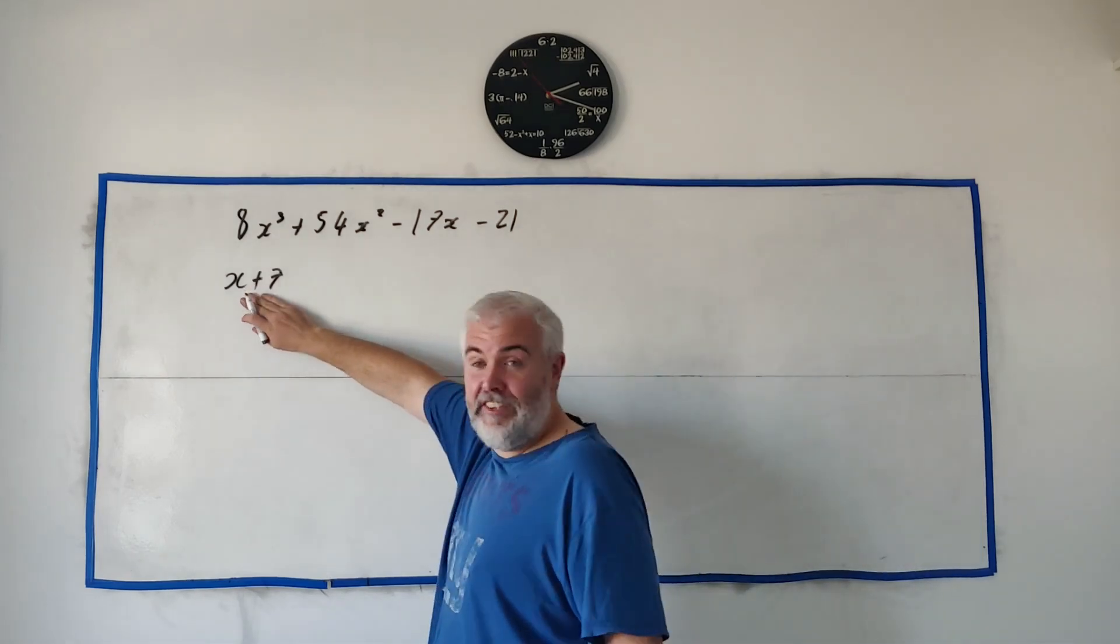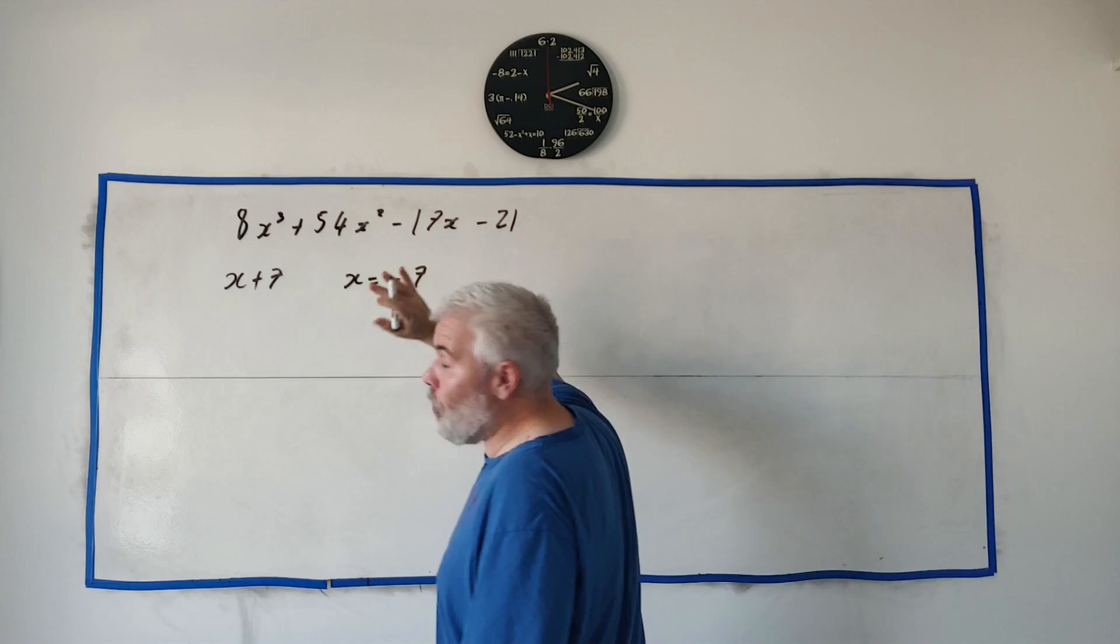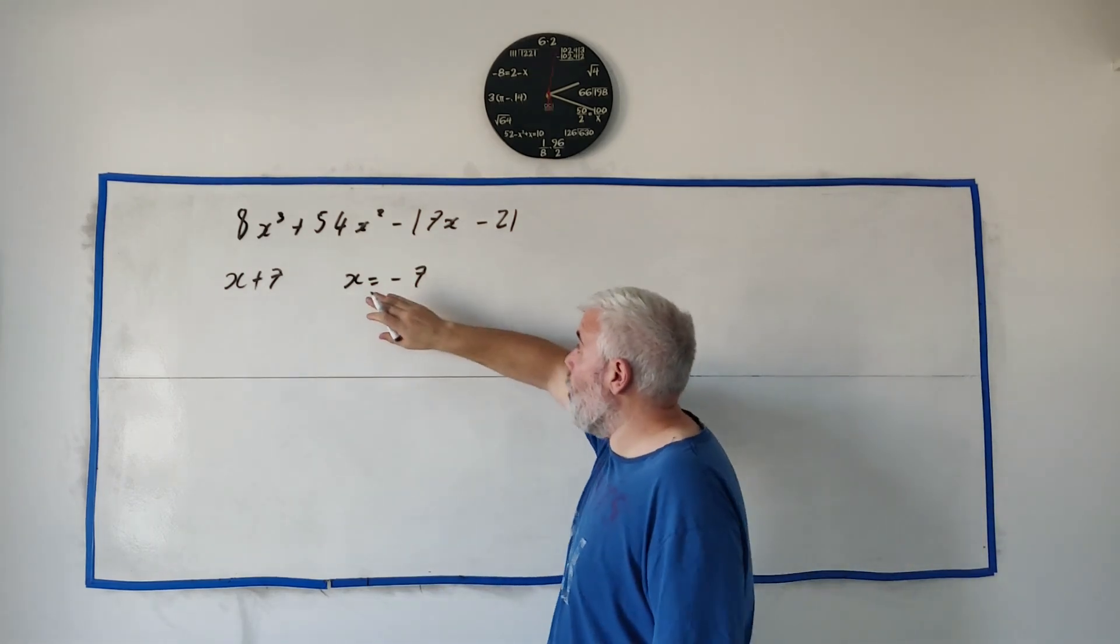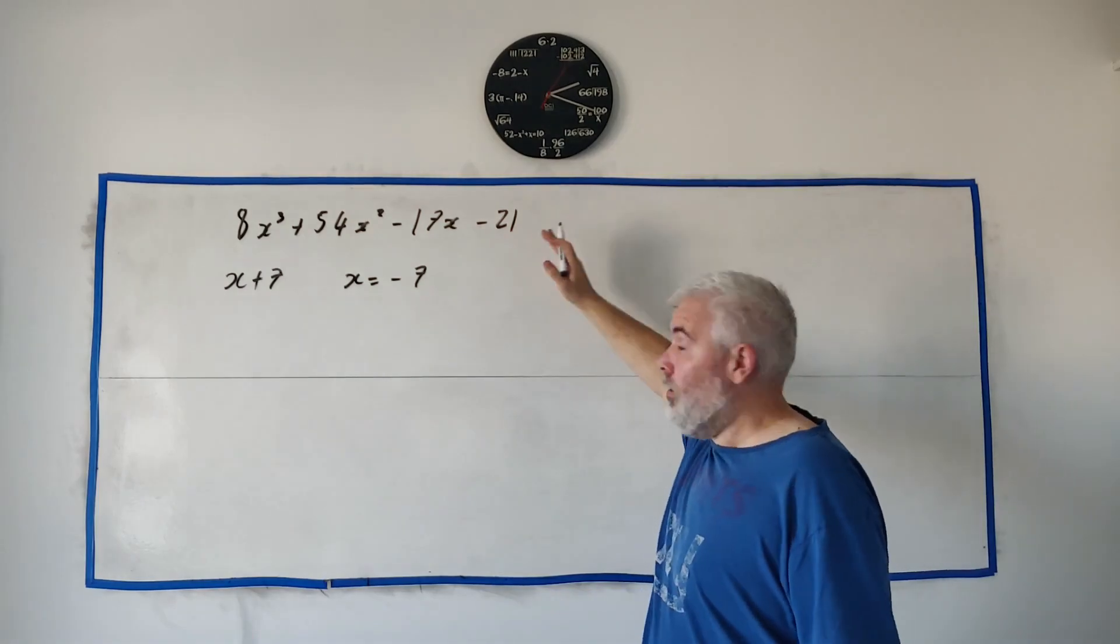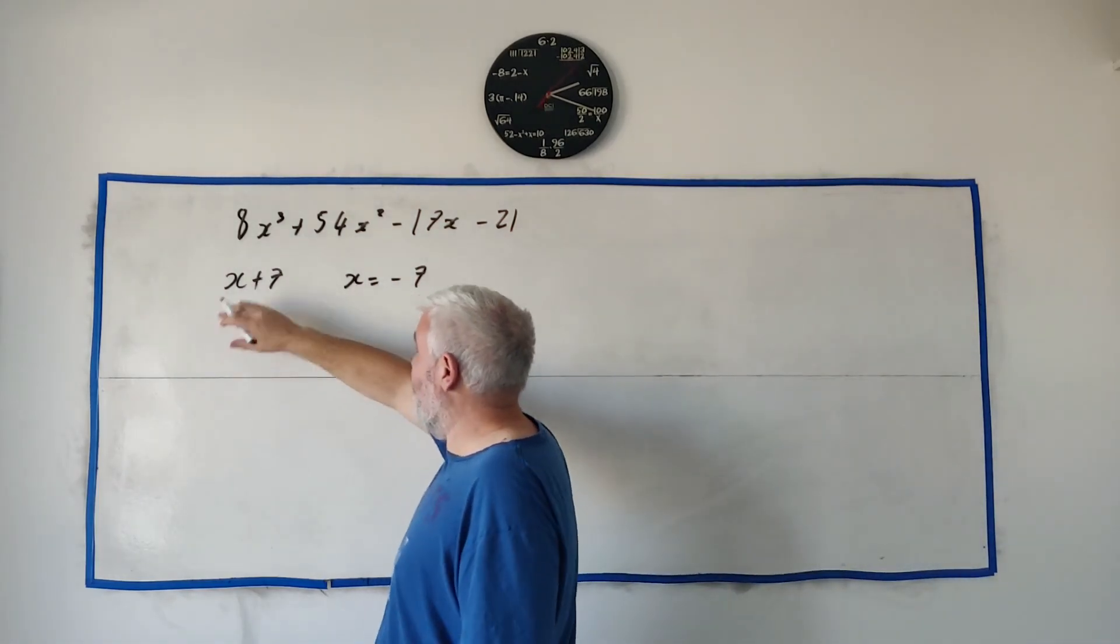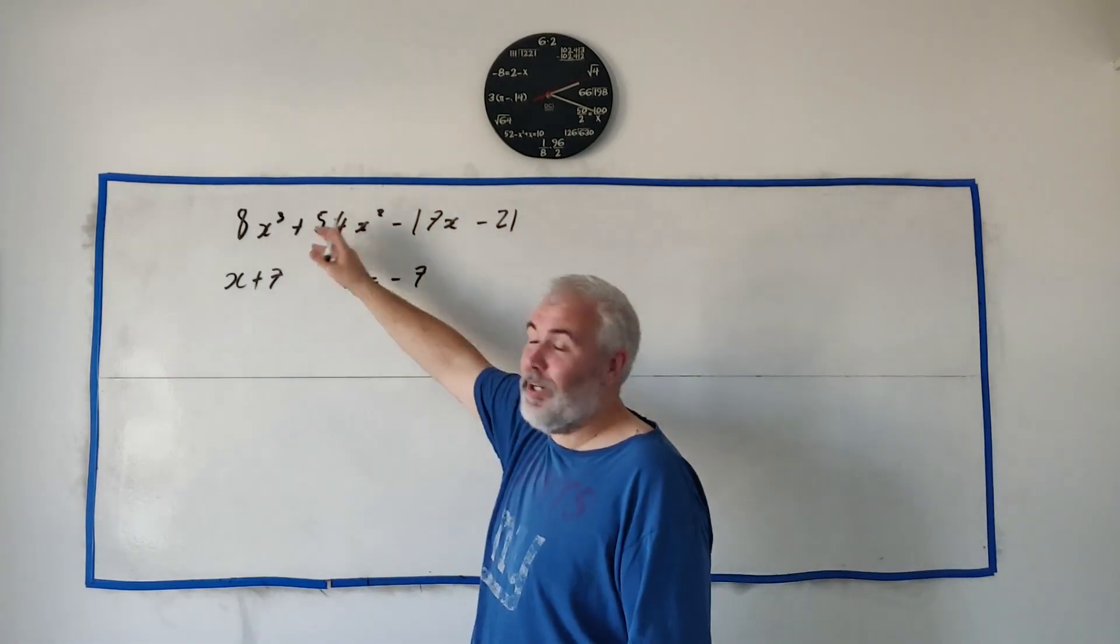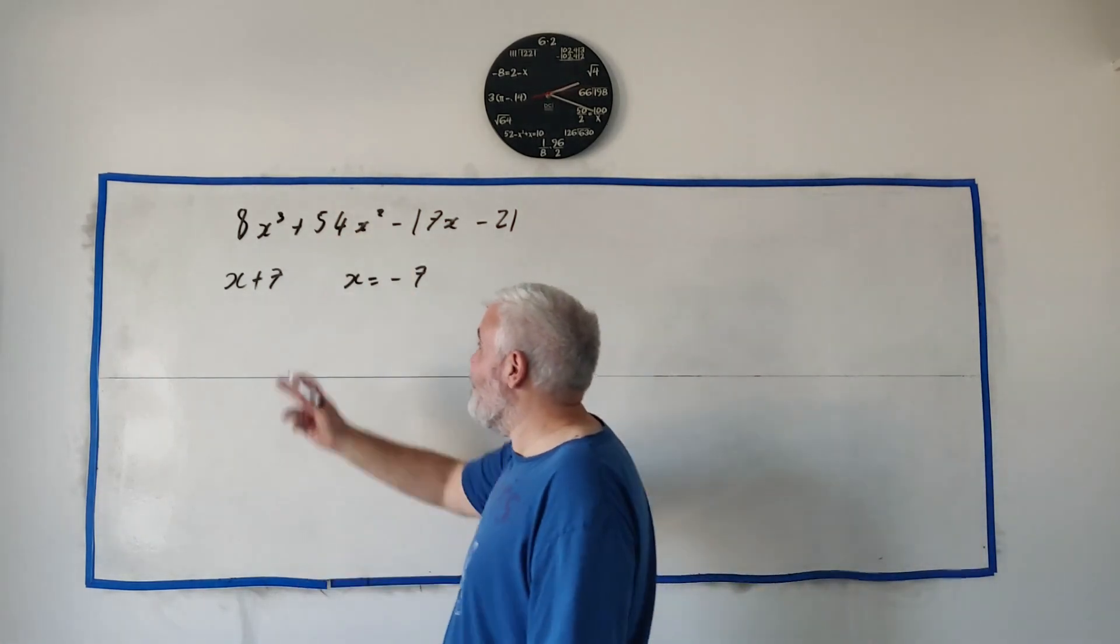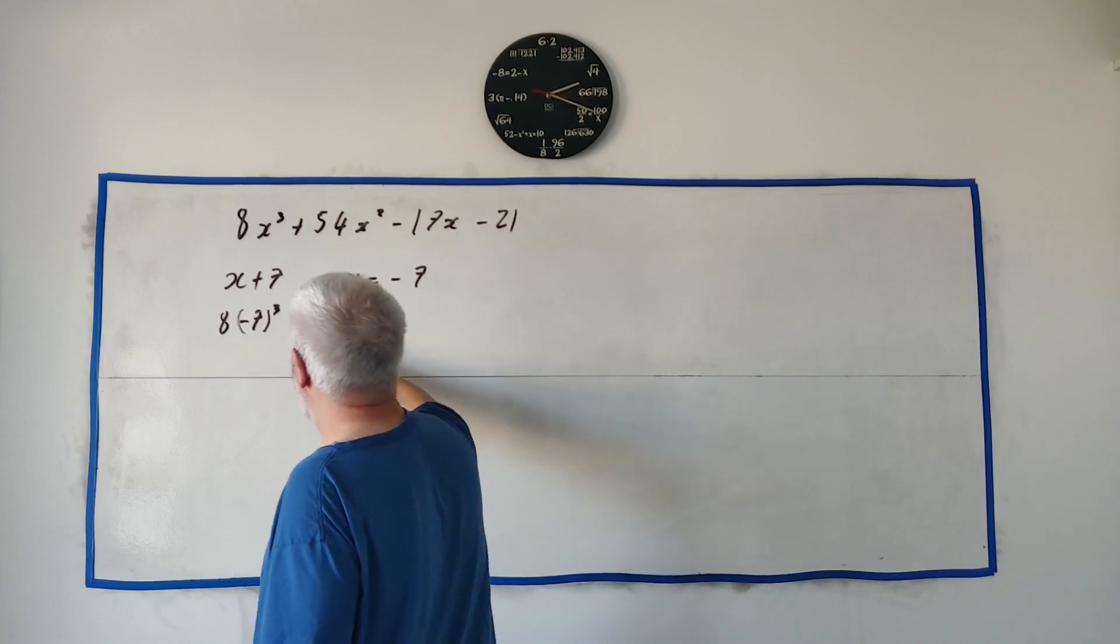The other way to say it if this is a factor that means x equals minus 7 is a root and that means when we put minus 7 into this we should find 0 so that's all we do. The examiner won't let you do it in your calculator obviously we can't just put it in and say yeah it equals 0 so you just have to show them that you're putting it in and something like this I believe is enough.